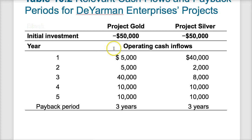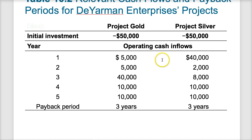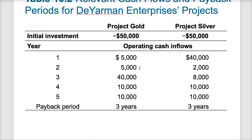For example, looking at two projects — Gold and Silver — with the same initial investment and the same three-year payback period of $50,000, the payback period would say they're equal. But if you look at the timing of cash flows, Project Silver appears better because in the first year you get $40,000 back rather than waiting until year three. That's why the timing of cash flows should also be considered as part of evaluating project risk.